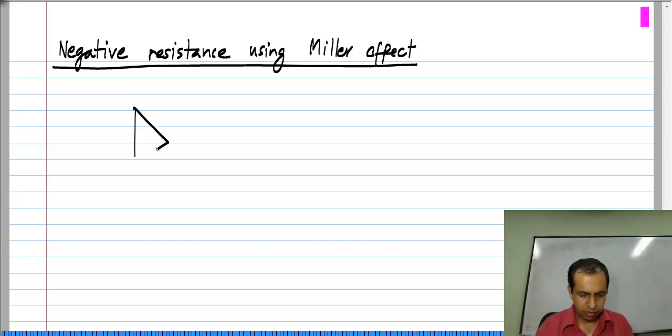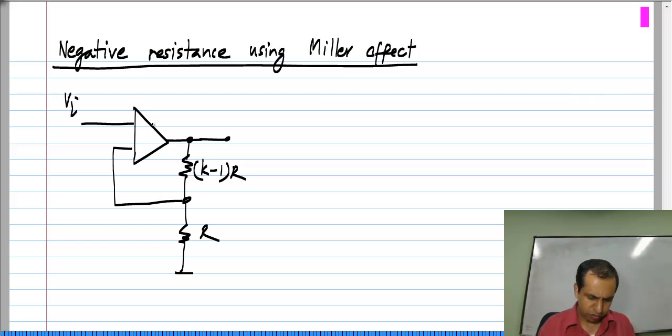Let us consider a non-inverting amplifier. If the input is V i, the output will be K V i, because of this resistance ratio. It is one plus the upper resistance divided by the lower resistance. In this condition, no current flows into the op amp, so the input resistance of this circuit is infinity.